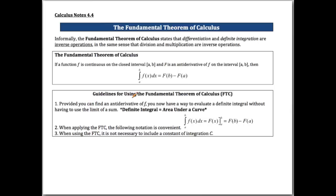Provided you can find an antiderivative of f, you now have a way to evaluate a definite integral without using the limit of a sum. The definite integral equals the area under the curve, so we have a way of finding this without dealing with all those rectangles and left or right endpoints — we just find the antiderivative and evaluate the definite integral.